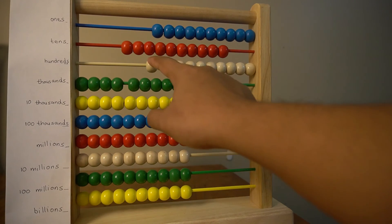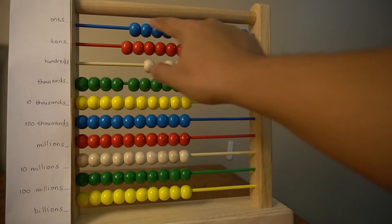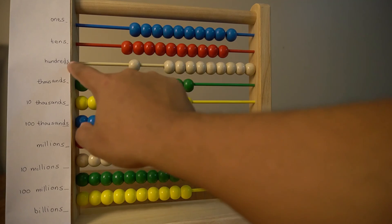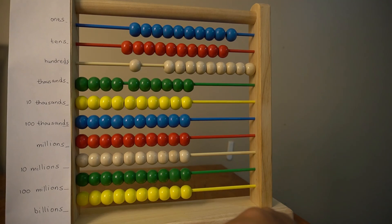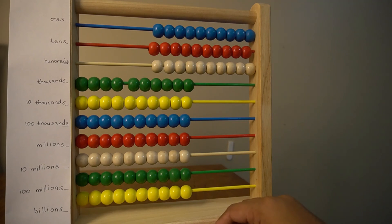This also means that I need a hundred of these blue beads in the ones row to make one of these white beads in the hundreds row. And I can use the same pattern all the way down the abacus.